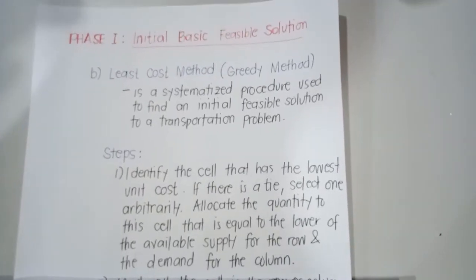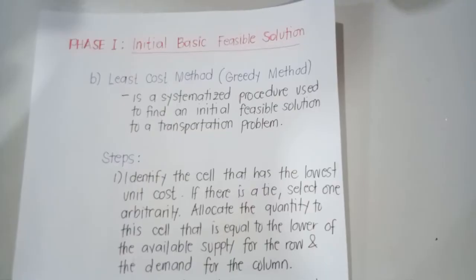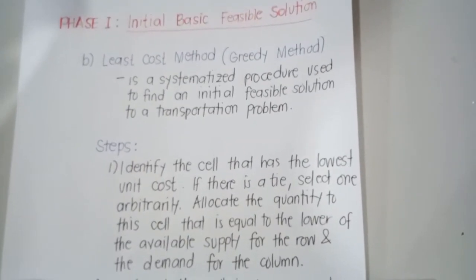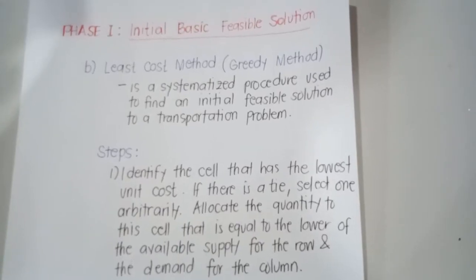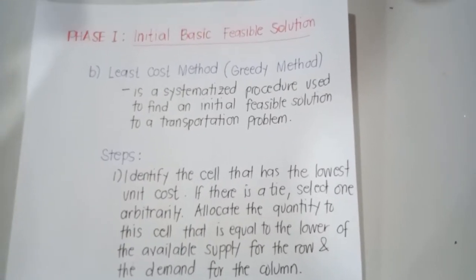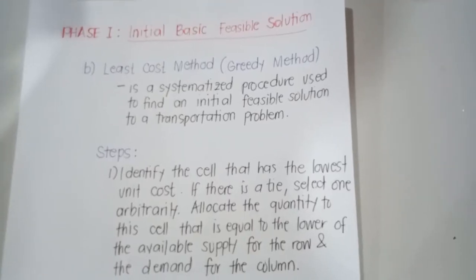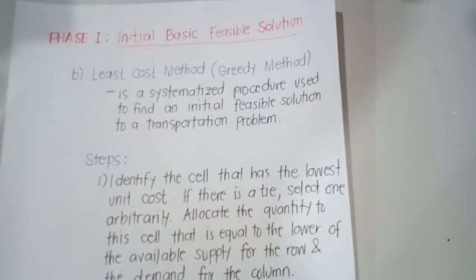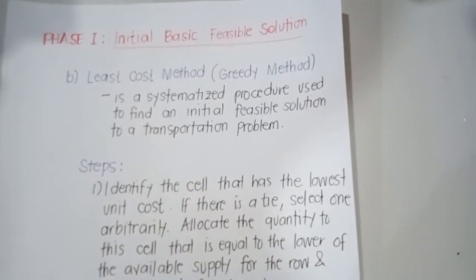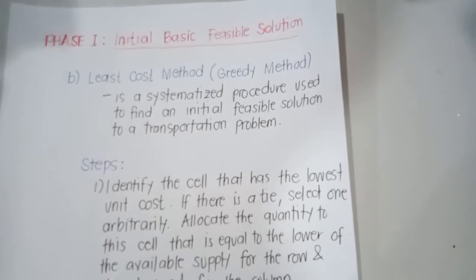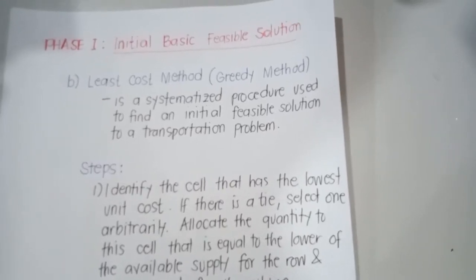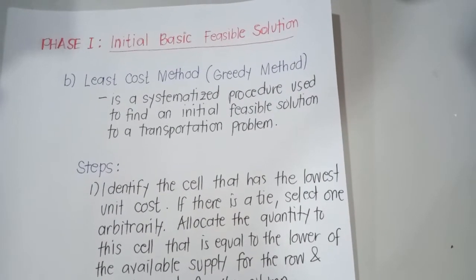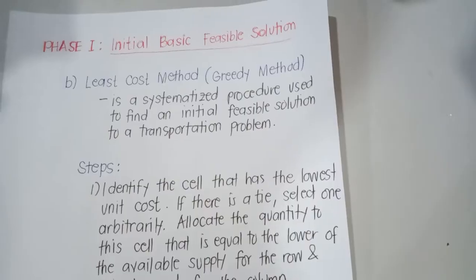The second method used to establish the initial basic feasible solution is what we call the least cost method, also known as the greedy method. The greedy method is a systematized procedure used to find an initial feasible solution to a transportation problem. In this method, the allocation begins with the cell which has the minimum cost, and the lower cost cells are chosen over the higher cost cells, with the objective to have the least cost of transportation.